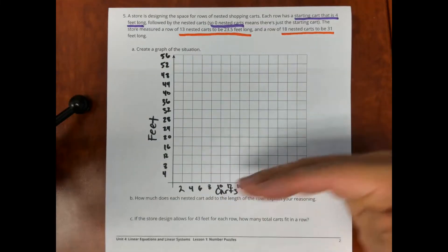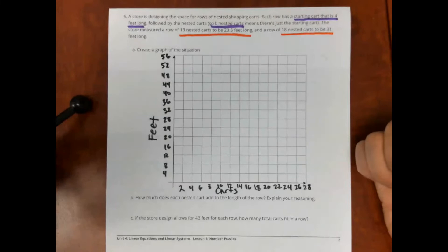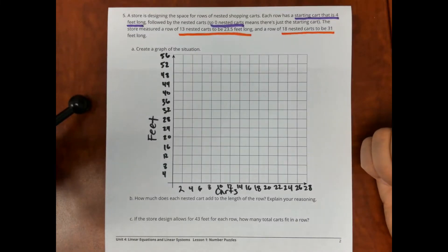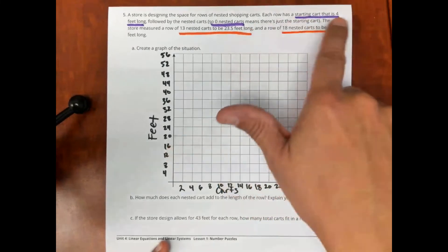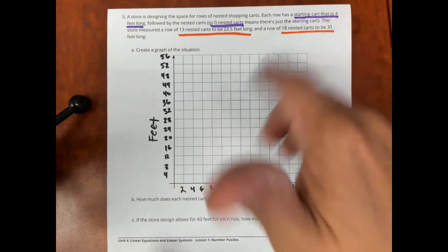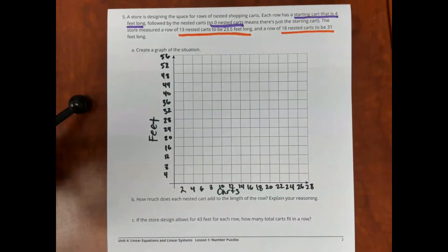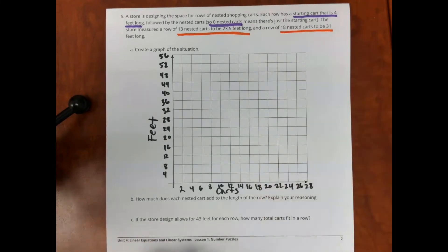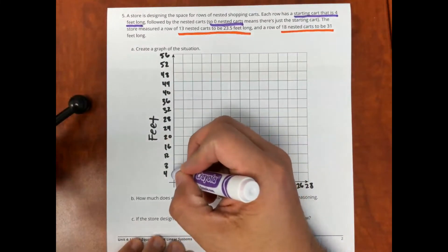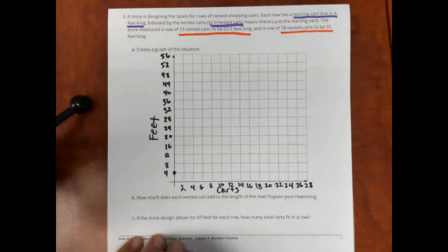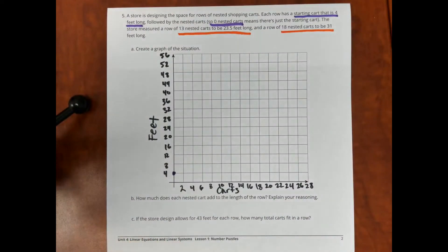Okay, and then just remember when you're making your scale, it doesn't matter what you go by as long as you can fit all the information. I went by these numbers because I want to get 23 and a half. I wanted to get 31 in my graph. Those numbers don't come up on the axis, but that is okay because I can graph it. So, I'm going to graph the first one. Zero nested carts is 4 feet. Zero carts is 4 feet. That's that point right there.